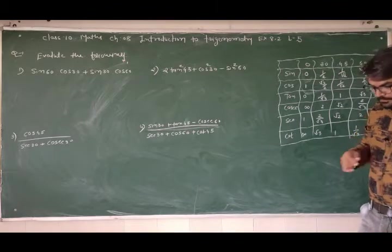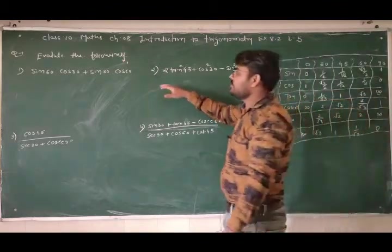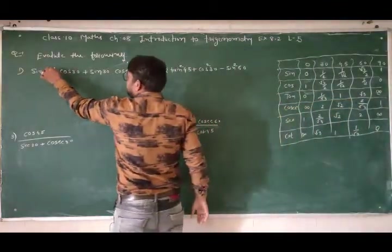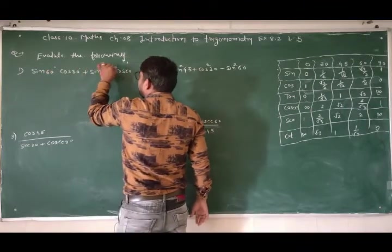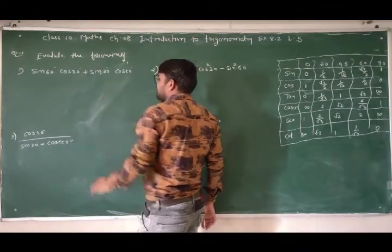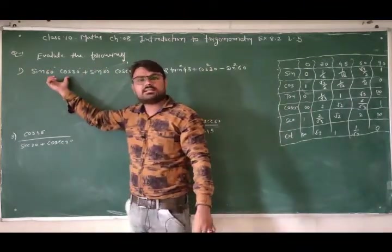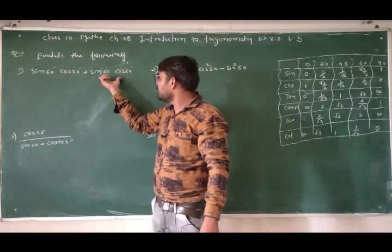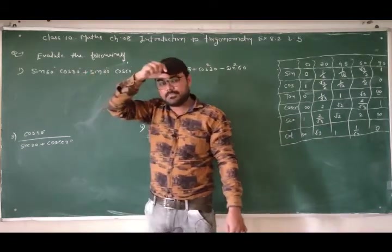Friends, look here — what is the first question? The first question is sin60·cos30 + sin30·cos60. That is, multiplication between the first two ratios, multiplication between the next two ratios, and addition between the two products.